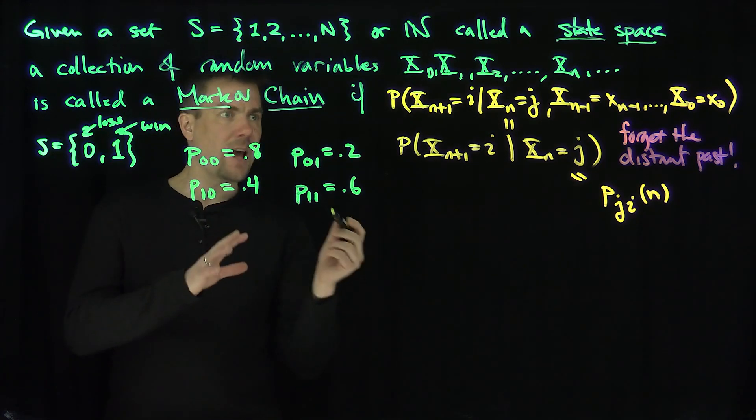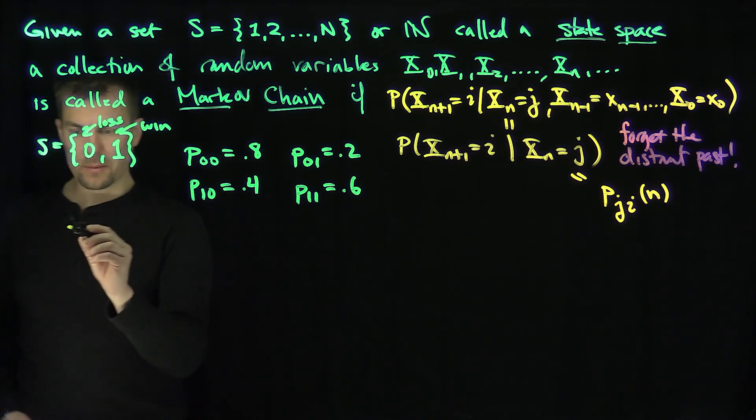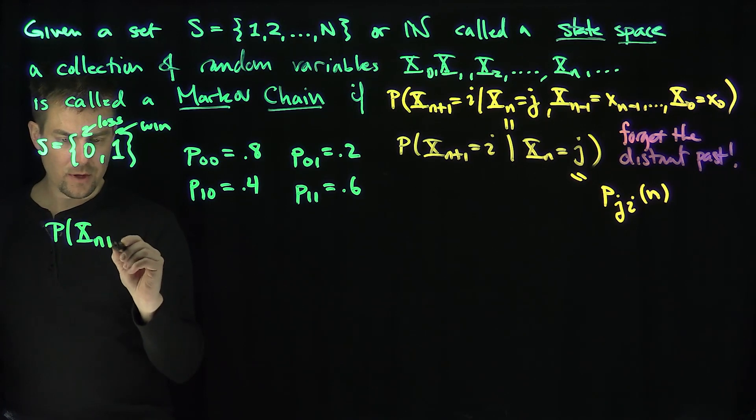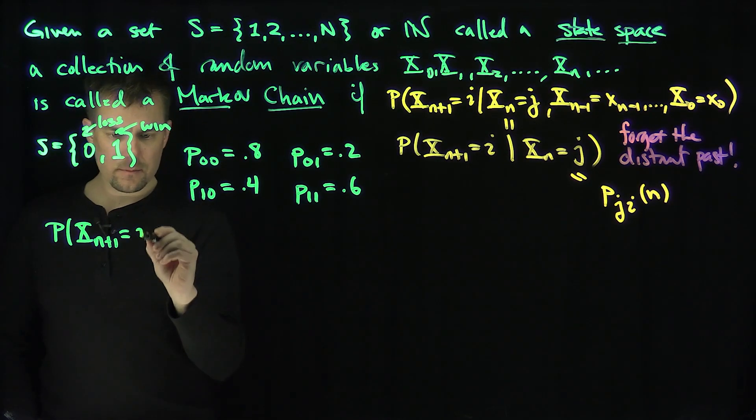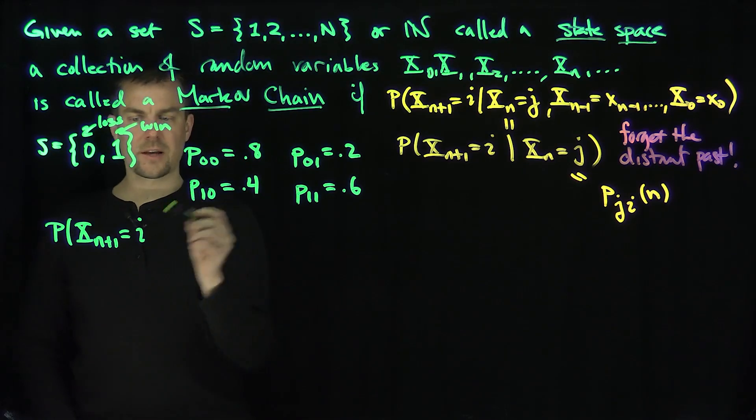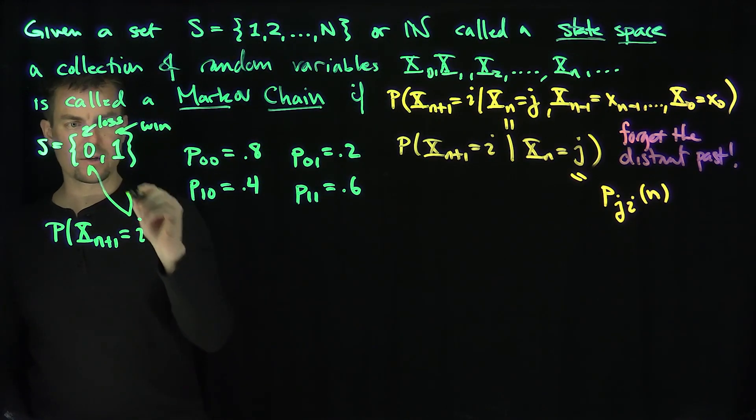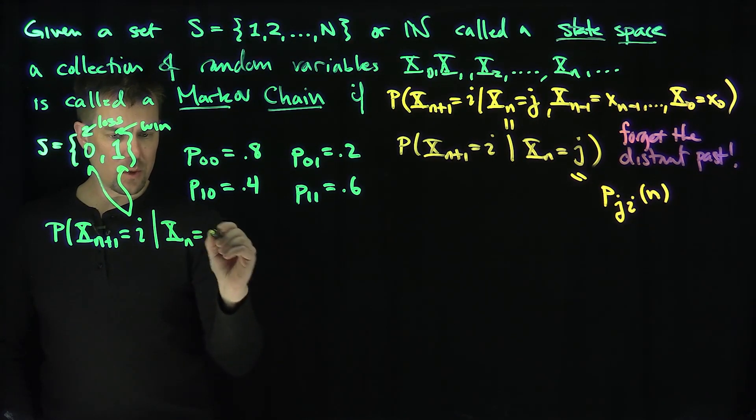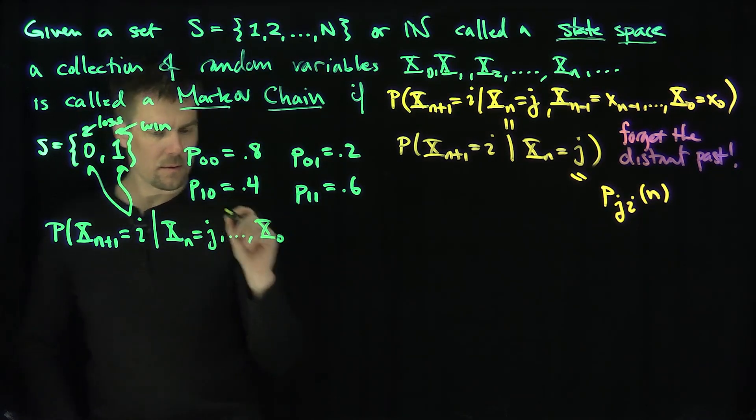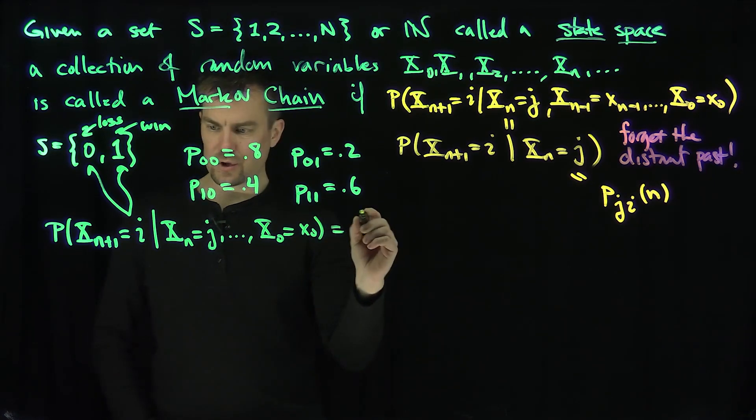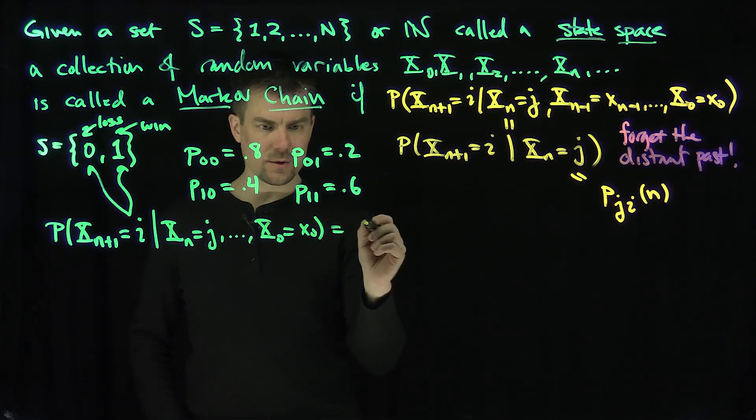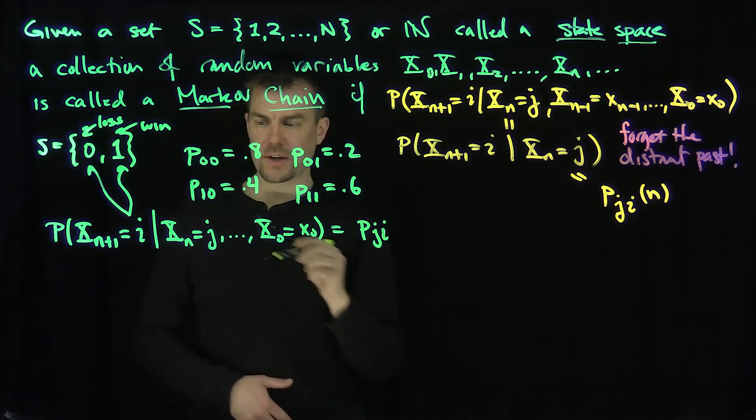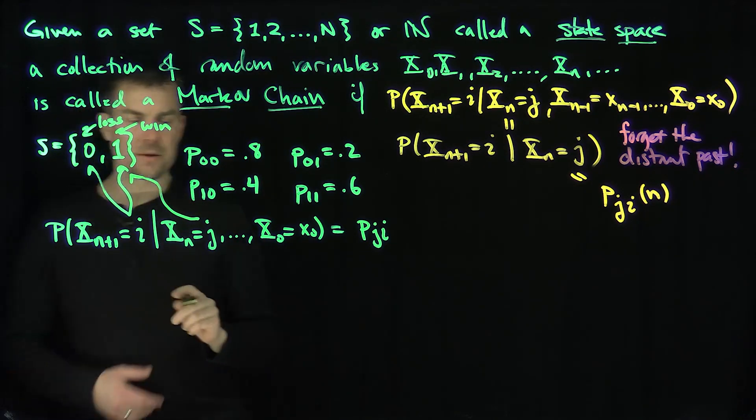So what do I mean by this? I mean that for any n, these are the corresponding probabilities. In other words, the probability that x_n+1 equals i in the state, so i here will be either 0 or 1, given that x_n was equal to j in all the distance, x_0 equals some number x_0, is just the probability of going from j to i, so this is just going to be p from j to i, for these values. In this case, j and i are in the state space.